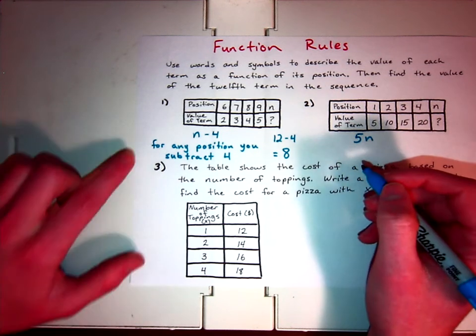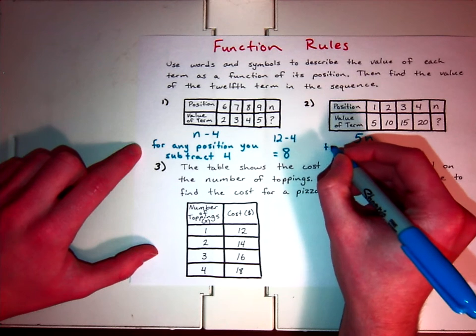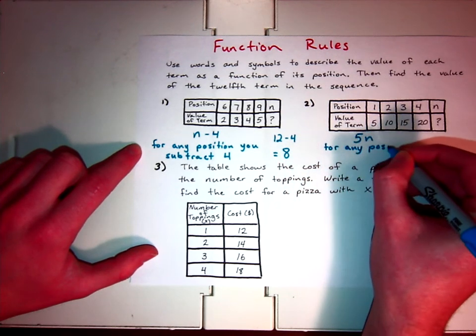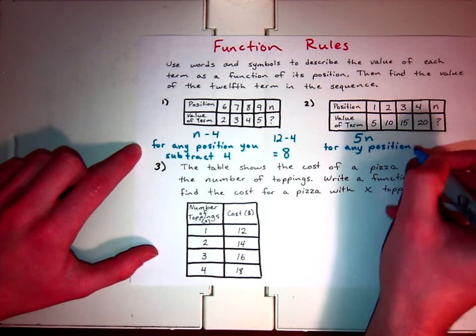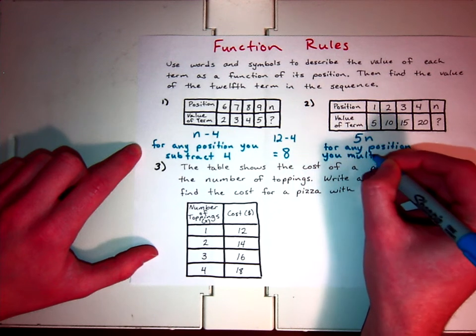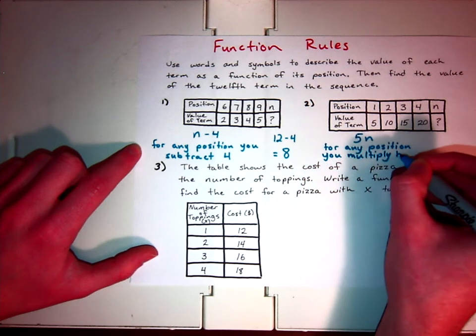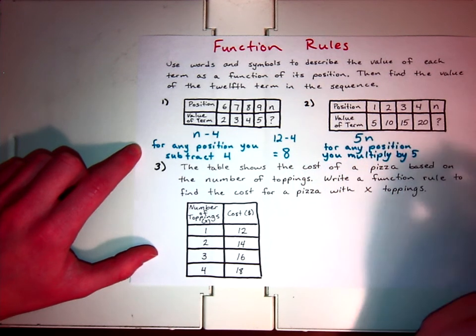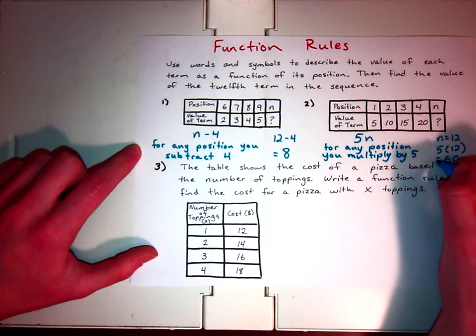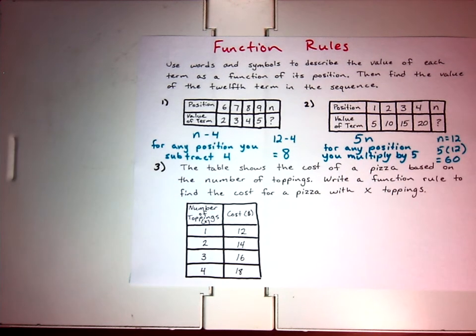If we're writing out with words, for any position, you multiply by five. And then, if we're testing again for the twelfth term, when n equals 12, it's going to be five times 12. Five times 12 is 60. So the twelfth term would equal 60.